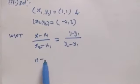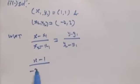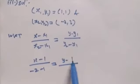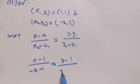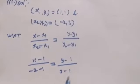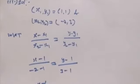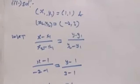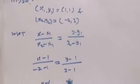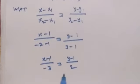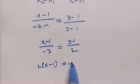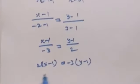So applying this: (x minus 1)/(-2 minus 1) equal to (y minus 1)/(3 minus 1). This gives (x minus 1)/(-3) equal to (y minus 1)/2. Next, cross multiplication: 2 into (x minus 1) equal to -3 into (y minus 1).